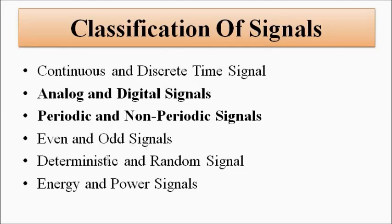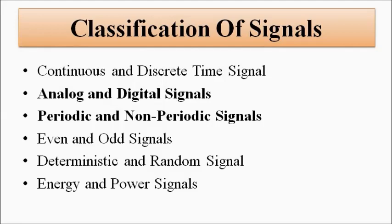We also have even and odd signals, which are symmetrical around the origin and the y-axis. Then deterministic and random signals: a deterministic signal has an absolute amplitude value that can be determined at any point in time, while a random signal is probabilistic in nature. Then energy and power signals. From the point of view of computer networking and data communication, we mainly focus on analog and digital signals, and periodic and non-periodic signals, as well as continuous and discrete-time signals, since digital signals are obtained from discrete-time signals.